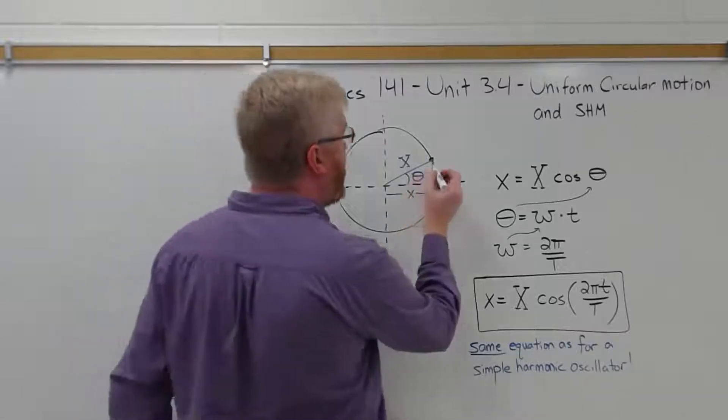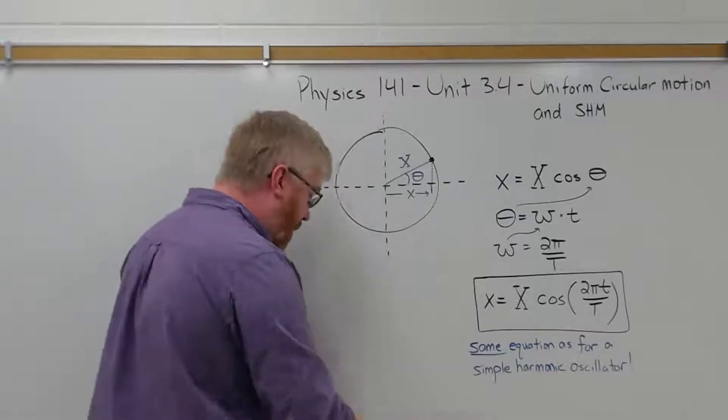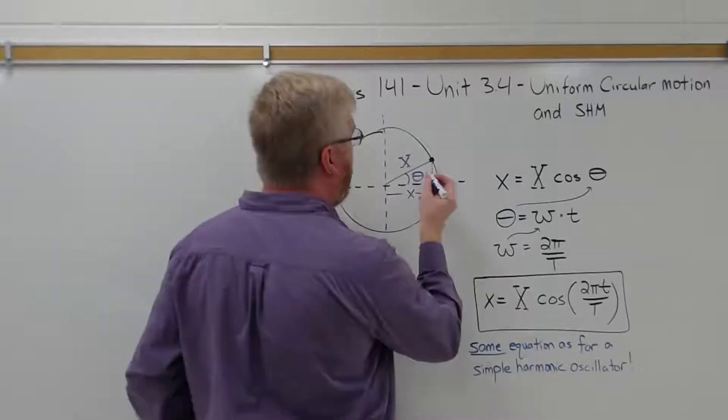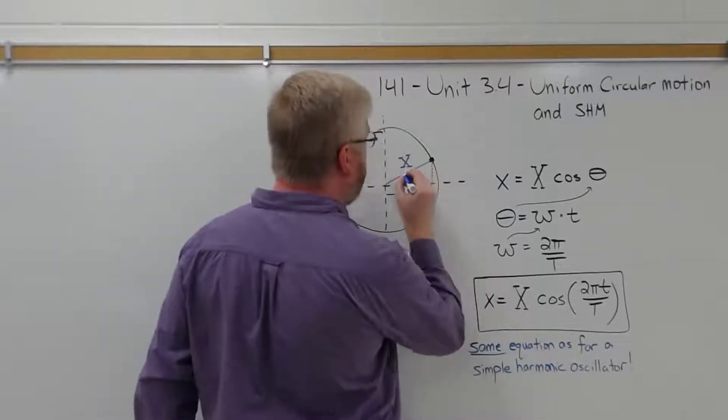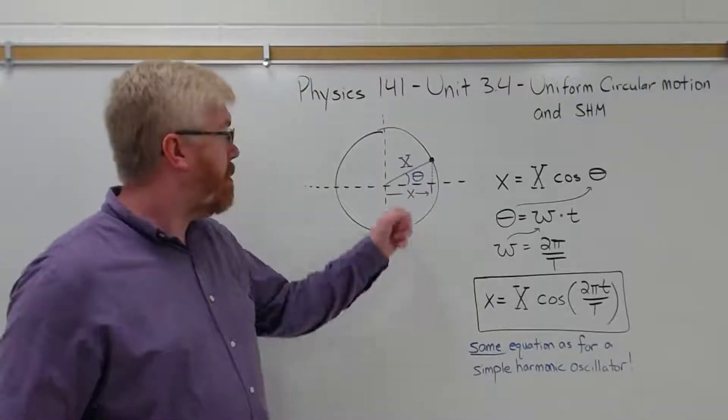So you have some object here, some distance capital X away from the center. That's the radius. I'm going to call the radius capital X, the amplitude. That's just a number that doesn't change. That's the distance.